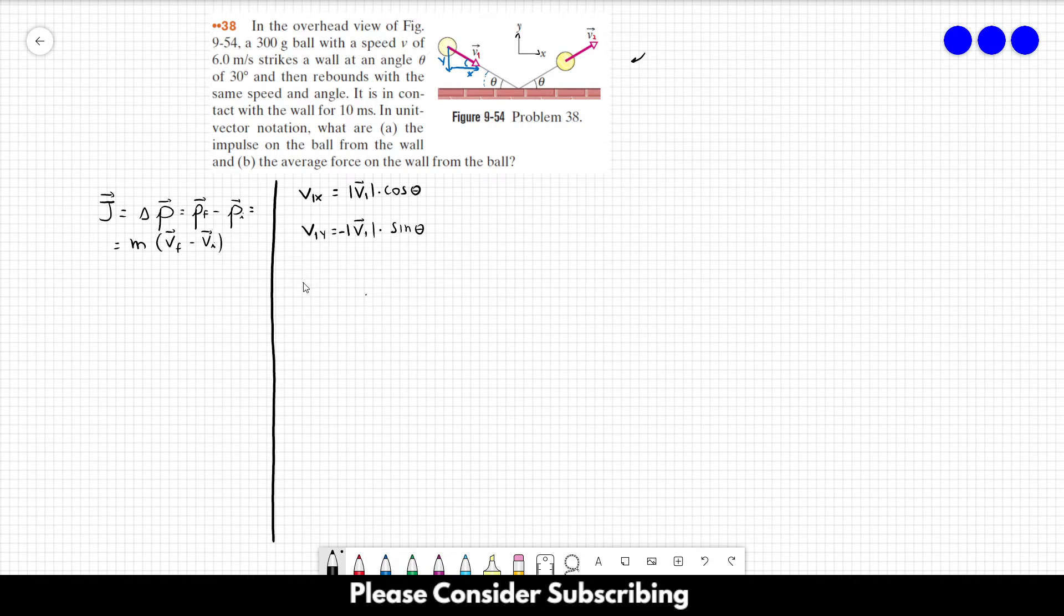For v2, we're going to do the same thing. So v2x is equal to the magnitude of v2 times the cosine of the angle, and v2y is equal to the magnitude of v2 times the sine of the angle.